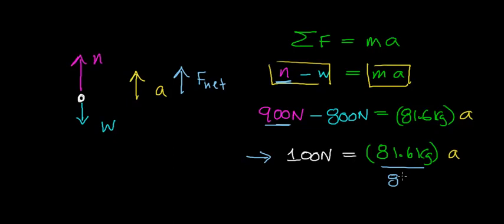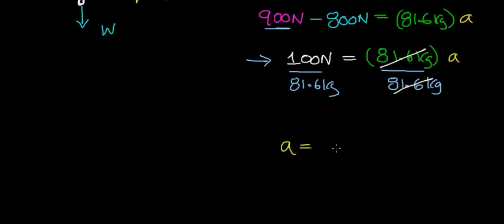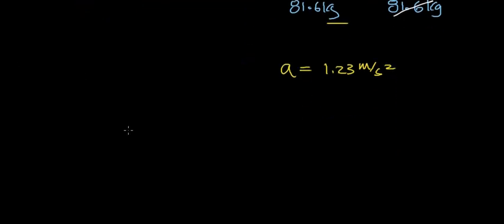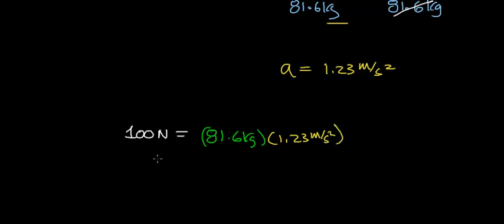To find the acceleration, we divide both sides of the equation by 81.6 kilograms. The 81.6 kilograms cancels out, and we find that the acceleration of this person equals 1.23 meters per second squared — a newton divided by a kilogram works out to be a meter per second squared. Another way to think about this: a 100 newton force is required to cause a person with a mass of 81.6 kilograms to accelerate at a rate of 1.23 meters per second squared. This is how fast their velocity changes.